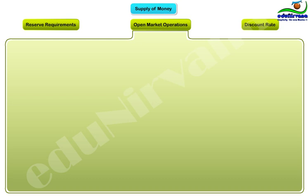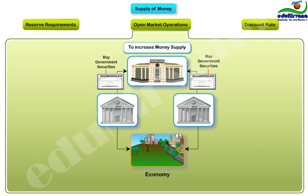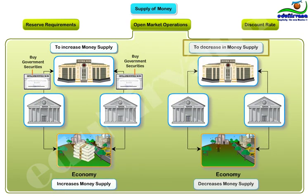The second tool is open market operations. I conduct open market operations when I buy or sell government securities from the public. To increase the money supply, I buy back the government securities held by banks. The money paid to the banks for buying back those securities increases the total money available with the banks and hence increases the supply of money in circulation for onward lending.